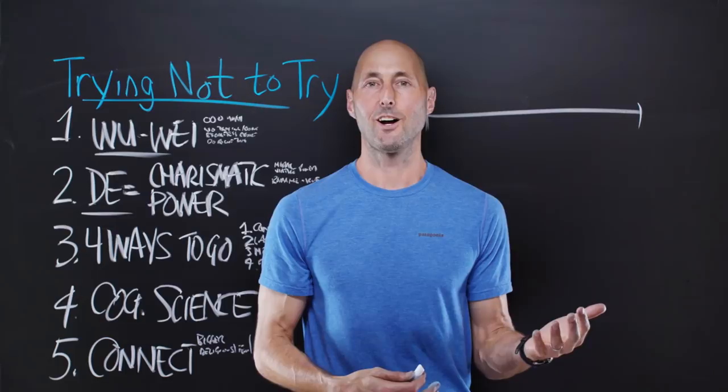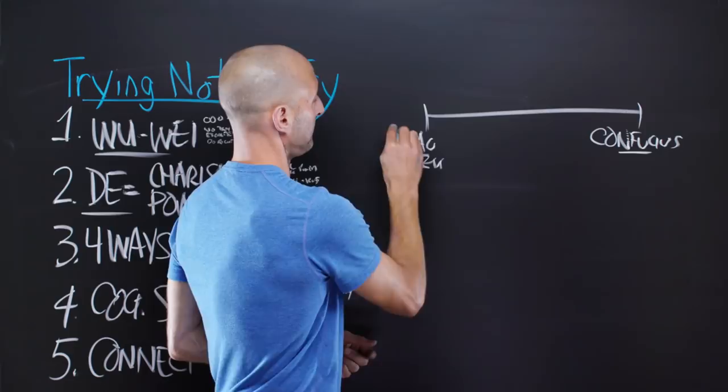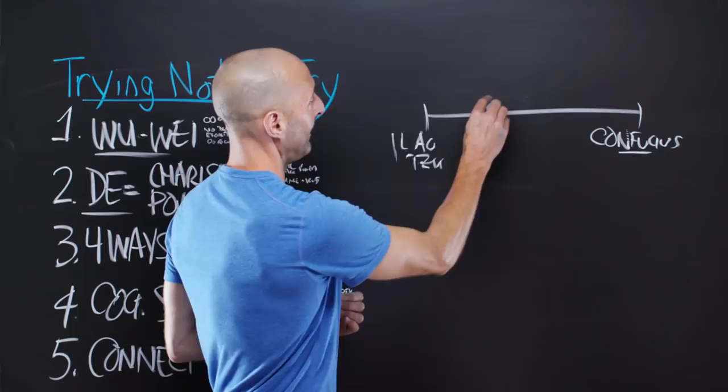Now, on one end of the equation, or the spectrum rather, we have Confucius. On the other, we have Lao Tzu. Lao Tzu, however you want to pronounce it, right? So Confucius, Lao Tzu. And then we have a couple of other individuals we'll introduce in a moment who kind of split the difference between the two of them.